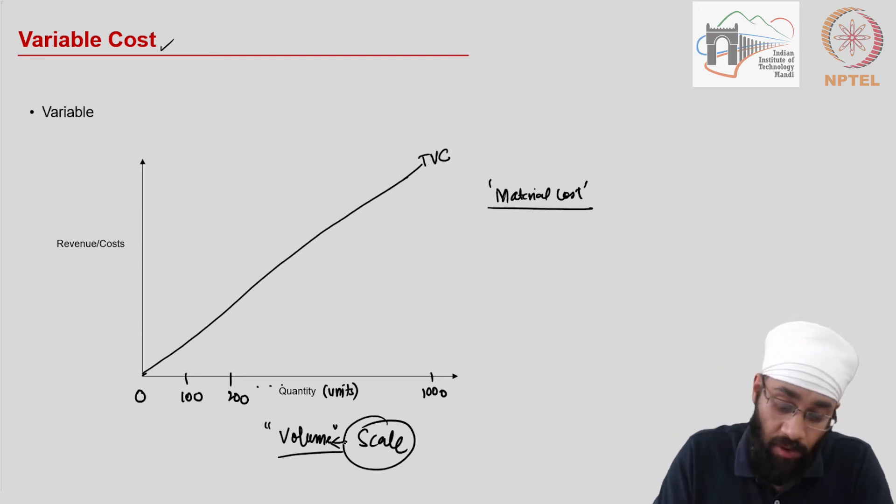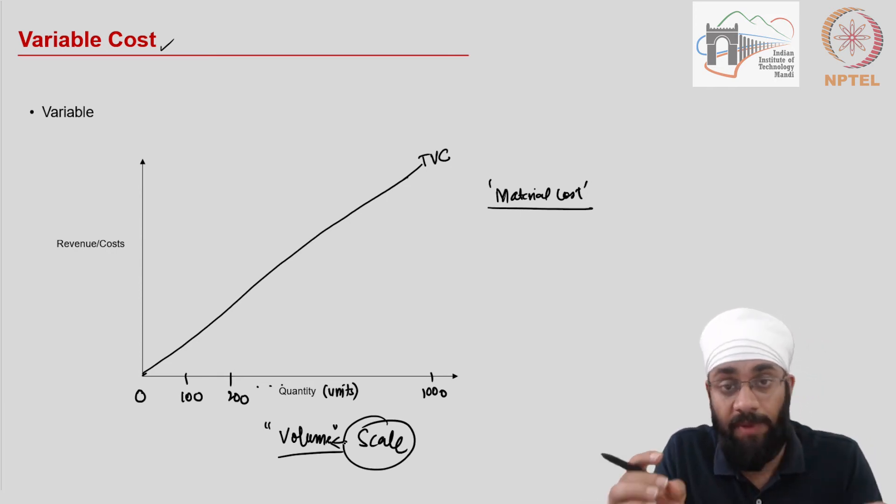How many units are you talking about and accordingly this cost is going to change or not change. Very important - again I'm emphasizing, volume is the key here. You see whether the cost is moving with the volume of production. Do not take, for example, per month basis. If the rent is being paid every month, is it variable cost? No, that's not a correct way of explaining it.